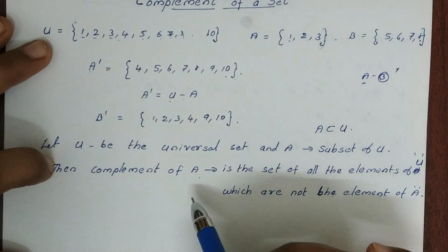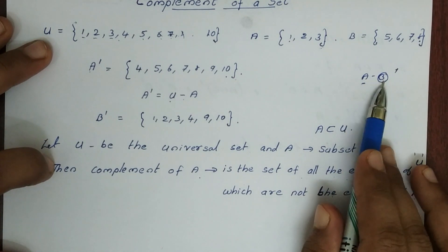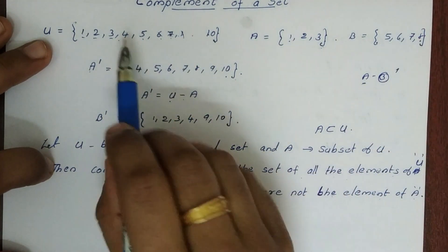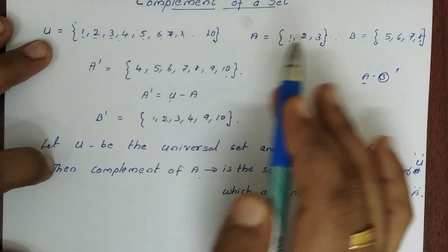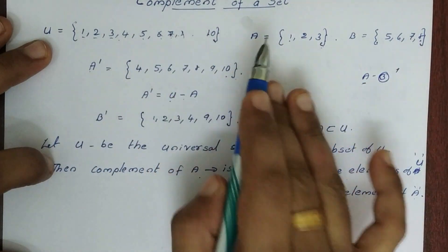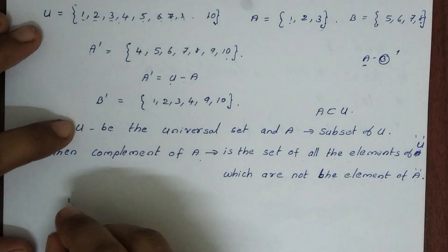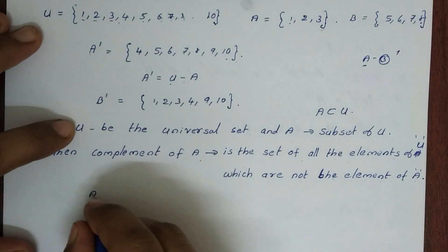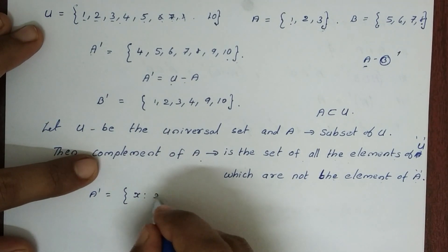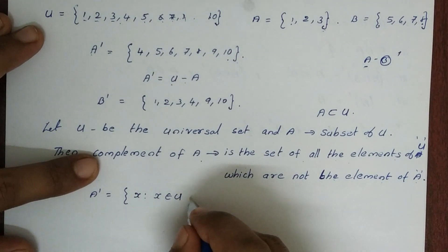We have A complement. If you have a difference, then we have A minus B, and we have B minus A. The set builder formula is: the set of all x such that x belongs to U and x does not belong to A.